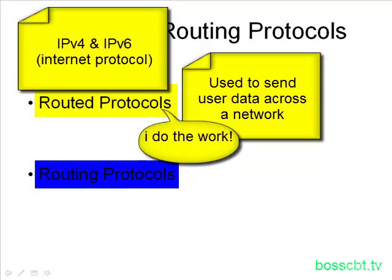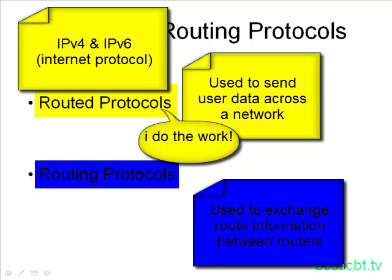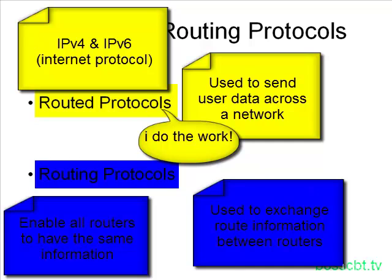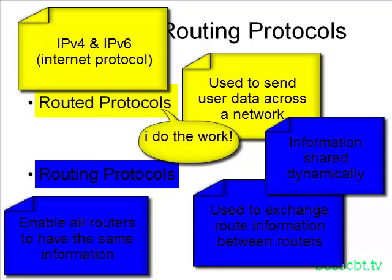Between routers, it's the same thing. A routing protocol will enable two routers to share their IP tables and to exchange the information in there, so that both routers will end up having the same routing table. These routing protocols are dynamic, meaning when something changes on the network — perhaps a server dies or a PC goes offline — a routing table could change because of that. Routing protocols will dynamically share that information with everybody, so if I get new information on how to get to New York a faster way, my routing protocol would automatically share that with you, and you would have up-to-date information as I have it, and vice versa.